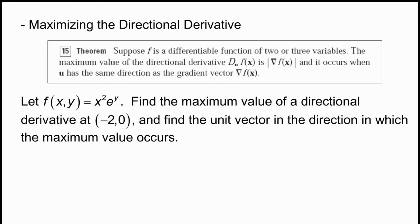Let's talk about maximizing the directional derivative. There's a theorem: when we want to maximize our directional derivative — find which direction from a given point gives the maximum rate of change, where the function is changing fastest — the maximum value equals the magnitude of the gradient, and it points in the same direction as the gradient vector. To find the maximum directional derivative, find the magnitude of the gradient vector at the point of interest.